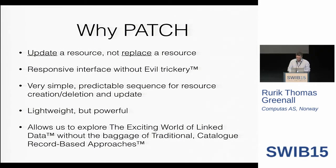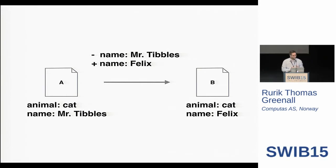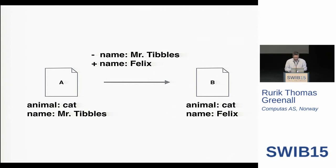So how does it work? PATCH is derived from the common — really computer science — understanding of patch. It's basically a description of the differences between two states of a resource. In terms of our previous example, we describe the change we want to make: we remove Mr. Tibbles and add Felix, and then we get a new state. Document B then has the changes we wanted. And that's easy — easy to think about, but not necessarily easy to implement.